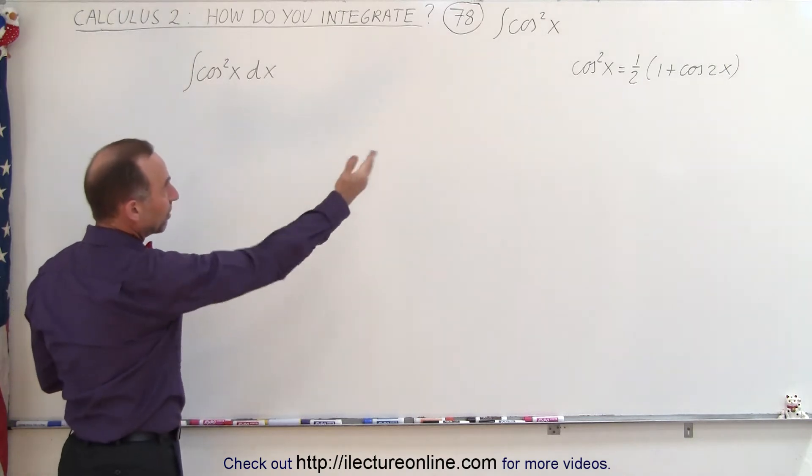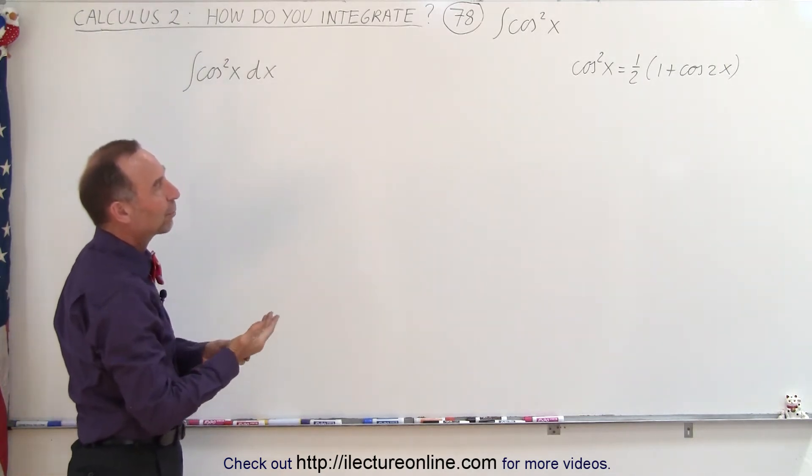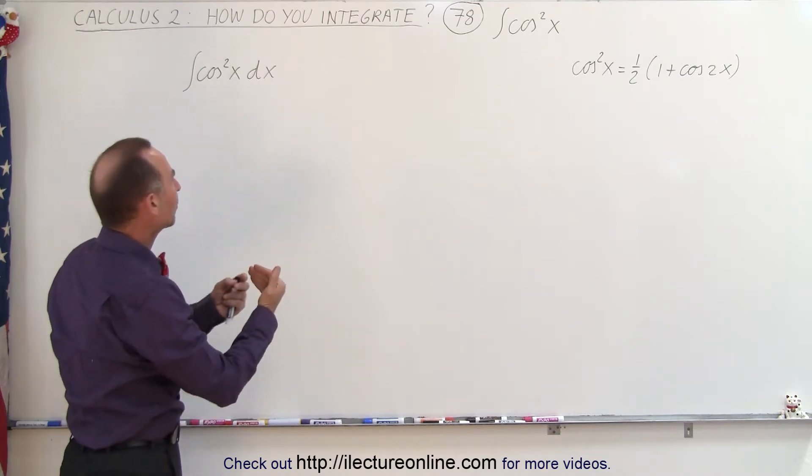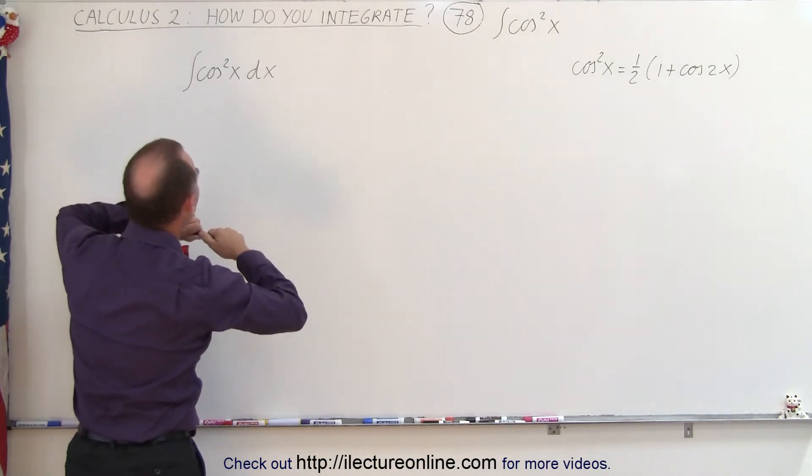And we're going to use the same approach. We can write the cosine square of x is equal to 1 half times 1 plus the cosine of 2x to reduce the square down to a single exponent or to an exponent equal to 1.